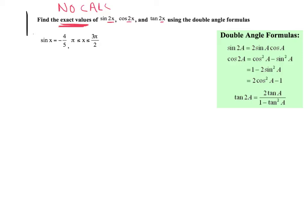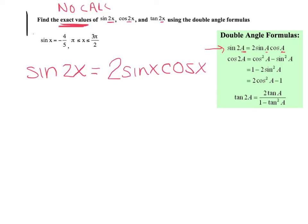Let's start with the sine of 2x. The first thing I'm going to do is copy down the formula. For sine of 2x I only have one option, and they use A's — since my problem uses x's I'll switch those. So sine of 2x equals 2 sin x cos x. Now for each of these we're going to draw a picture to find our missing pieces, and they'll be very specific about where your triangle is sitting.